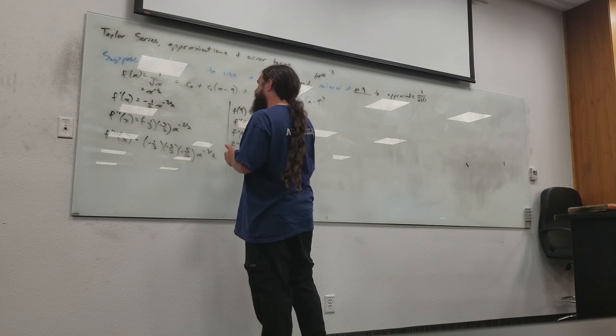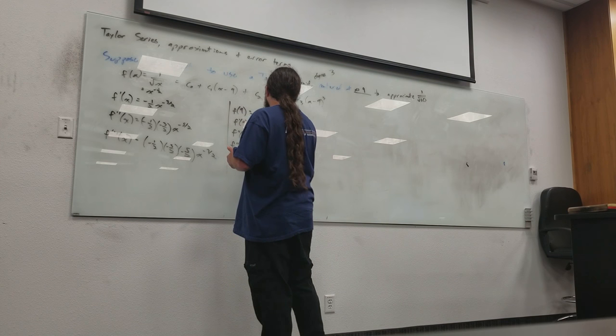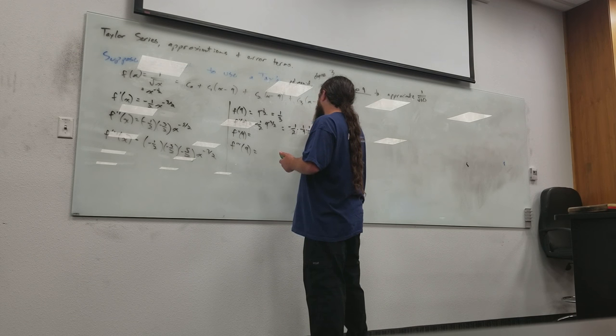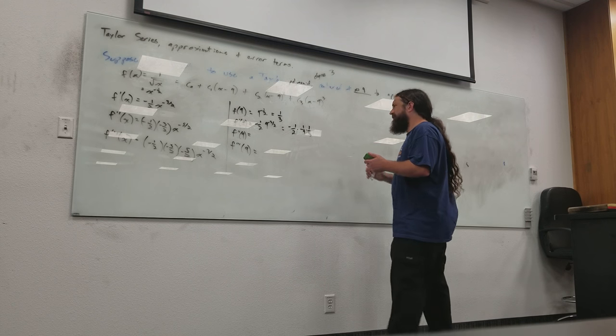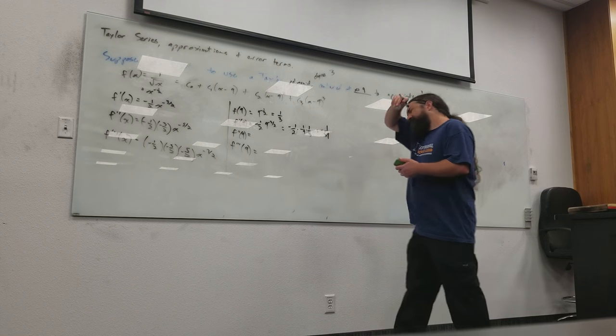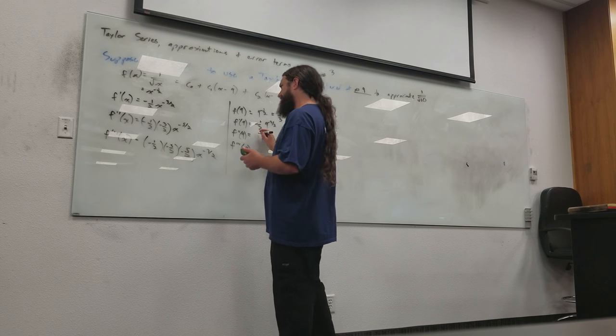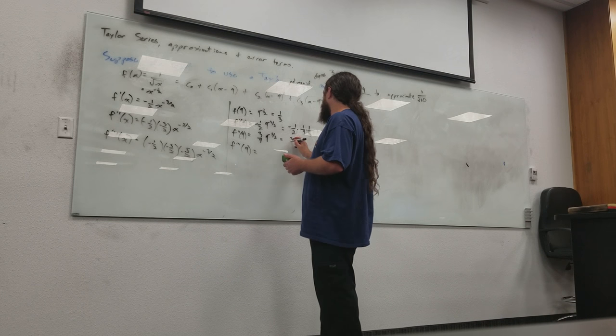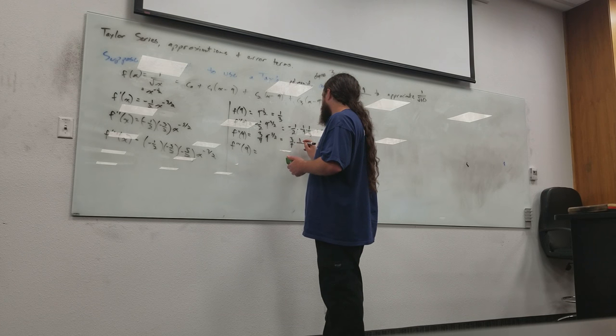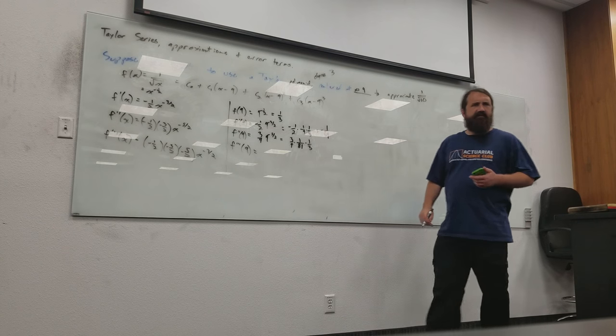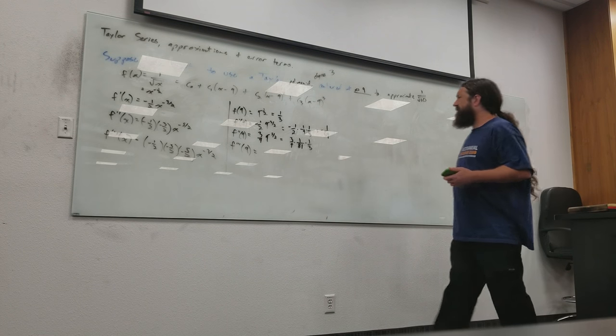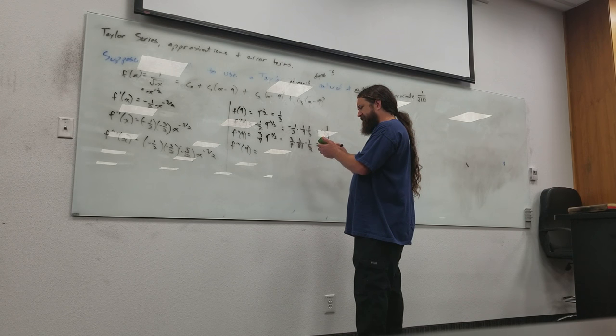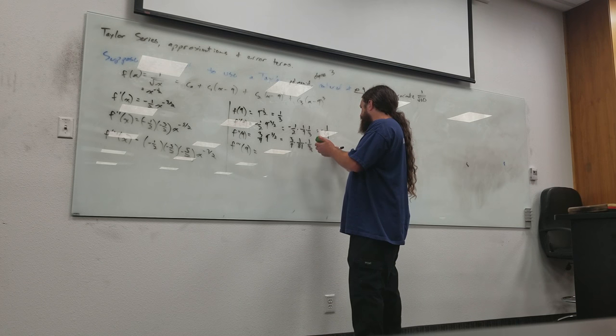So f of nine is nine to the negative one-half, which is what? One over square root of nine is one-third. Okay. f prime of nine is, it looks like... Let's see if you figure that one. So, f prime should be negative, shouldn't it? Yeah. Okay, yeah, yeah. Alright. Hold on. Oh yeah, I'm off by a thing here. Okay, I got it. Alright, so f prime, I'm looking at the line below it. f prime is negative one-half times nine to the negative three-halves, which is negative one-half times one-ninth times one-third, right? Okay, so this is negative one over fifty-four.